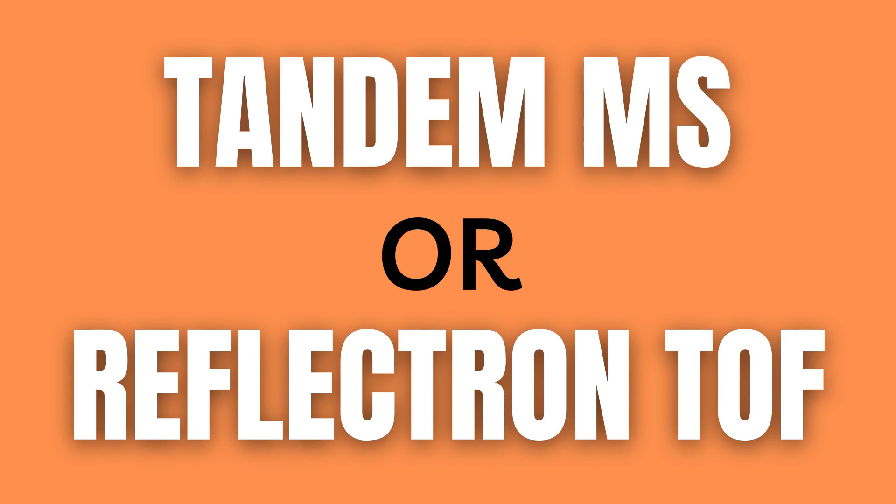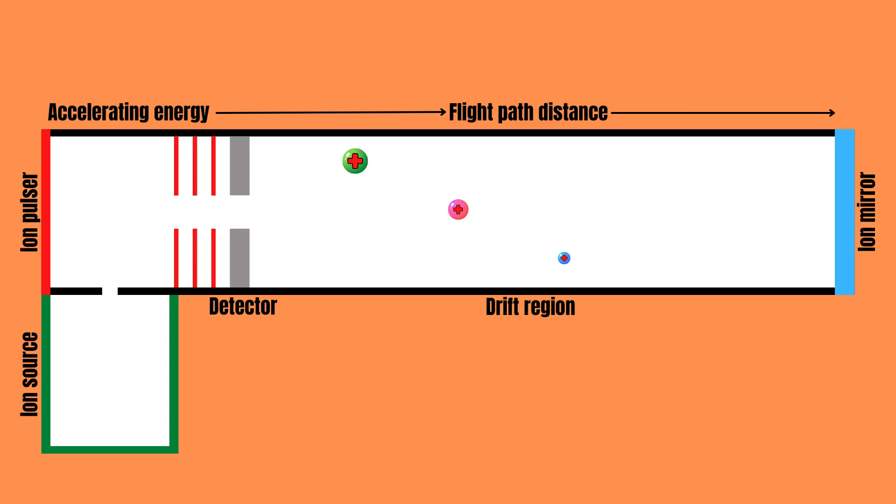Another solution more unique to time of flight mass analyzers is to add a reflectron TOF. This doubles the distance traveled by the particles, since an ion mirror is added at the end of the drift region, causing the ions to travel there and back again. This increase in the distance traveled results in an improved resolution.